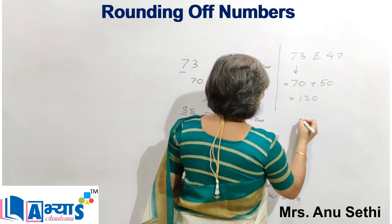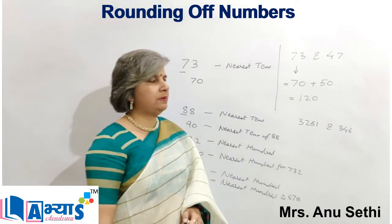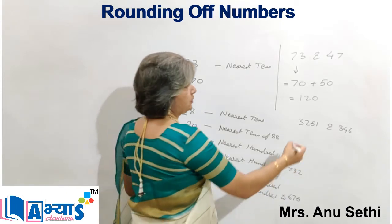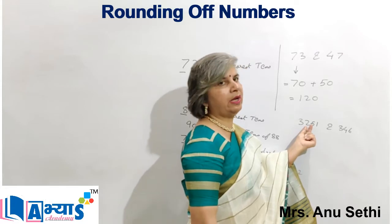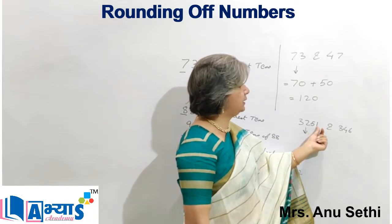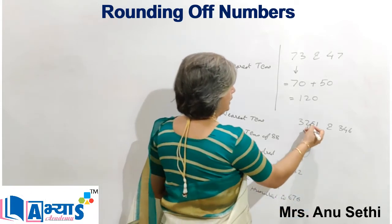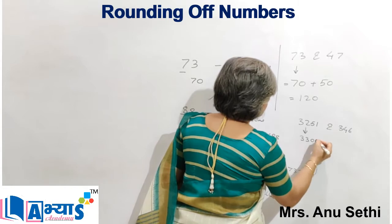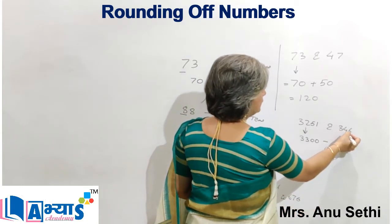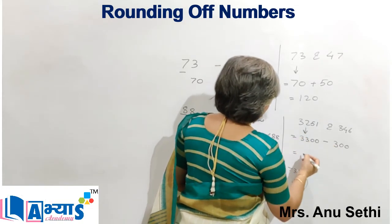For example, suppose we are subtracting 346 from 3251 after rounding off to the nearest hundred. For 3251, the hundreds digit is 2 and the next digit is 5, so since 51 is more than 50, I will add 1 to 2 and get 3300. For 346, the tens digit is 4 which is less than 5, so it rounds to 300. Then I perform the calculation: 3300 minus 300 equals 3000.